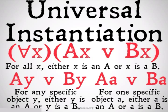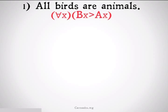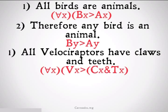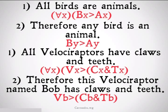With that out of the way, let's go on to some more concrete examples. All birds are animals: for all X, if X is a bird, then X is an animal. Therefore, any bird is an animal — BY implies AY. All velociraptors have claws and teeth: for all X, X being a velociraptor implies that X has claws and X has teeth. Therefore, this velociraptor named Bob has claws and teeth — velociraptor Bob implies Bob has claws and Bob has teeth.